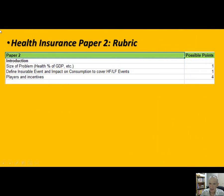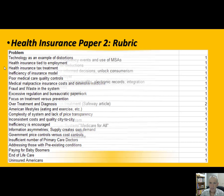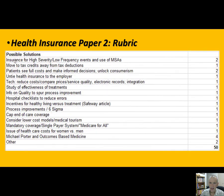The rubric is in three pieces, and that's what I recommend for your paper. You have an introduction to the issue, then you go into detail on the problem of healthcare and health insurance, and then you go through possible solutions. That's your paper structure.